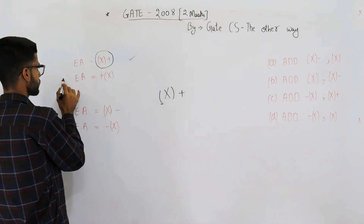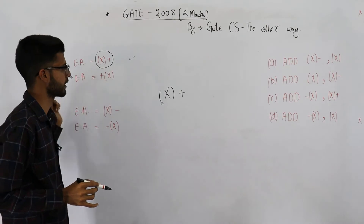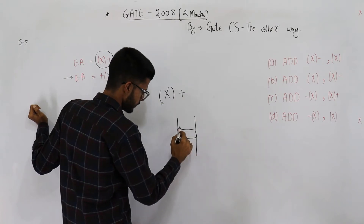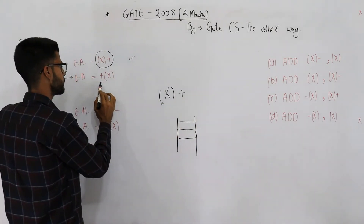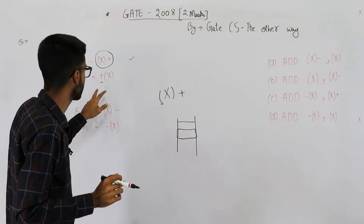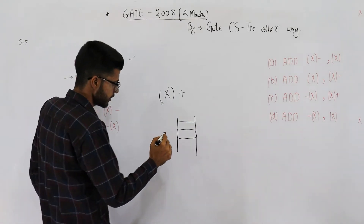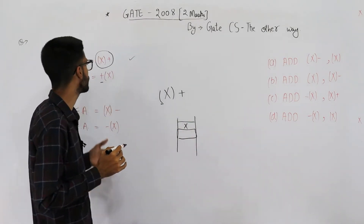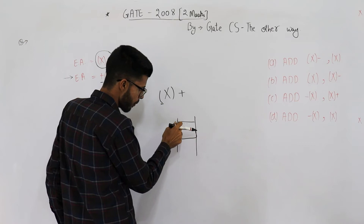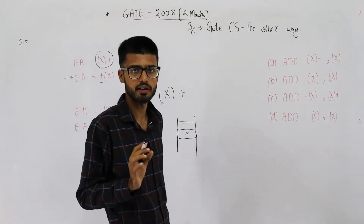Similarly, the meaning of EA = +x: say this is location x. This one is a pre-increment, meaning you need to increment x before accessing. So the effective address lies at location x, but first you increment x so it points to the next location, and then at that incremented location you find your effective address.